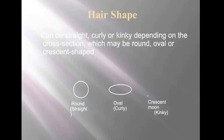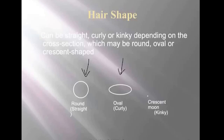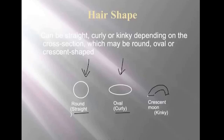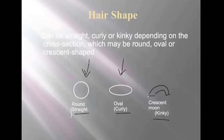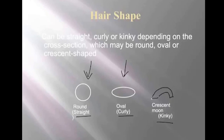The hair shape — if you dissect the hair straight in half and look at it on end — has three cross-sectional forms. Round, which results in straight hair. Oval, which results in curly hair. And a crescent moon shape, which actually looks like a macaroni noodle. You can see how and why that would result in three different hair textures.